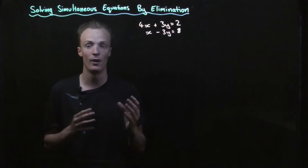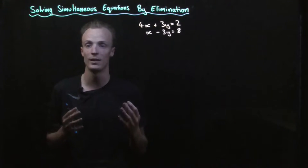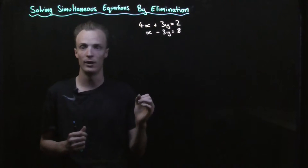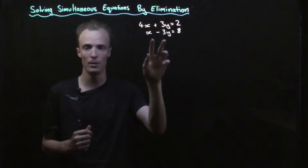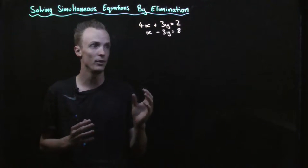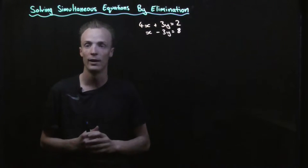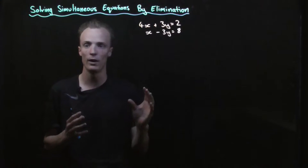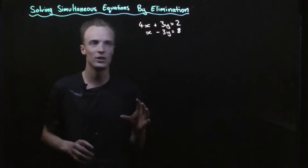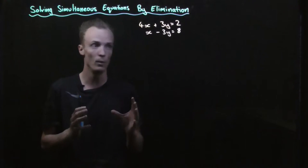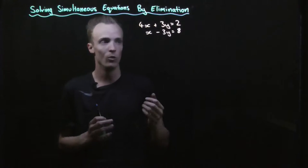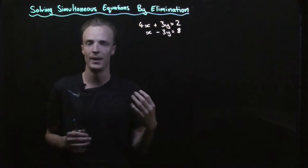Another method that we can use to find the solution to simultaneous equations is the process of elimination, where the main goal is to eliminate one of the variables that exist between our equations. In this case we've got the variables of x and y, so we're trying to eliminate one of them by combining these equations. To use the process of elimination we've either got to add these equations together or subtract one of the equations from the other.